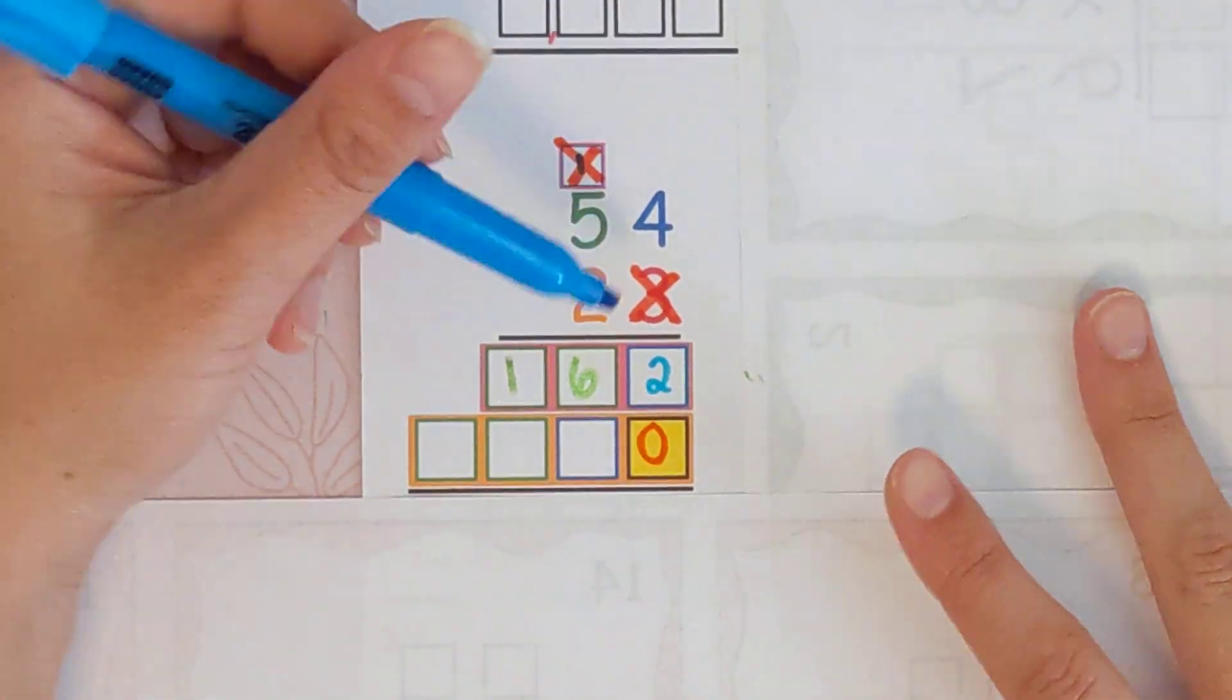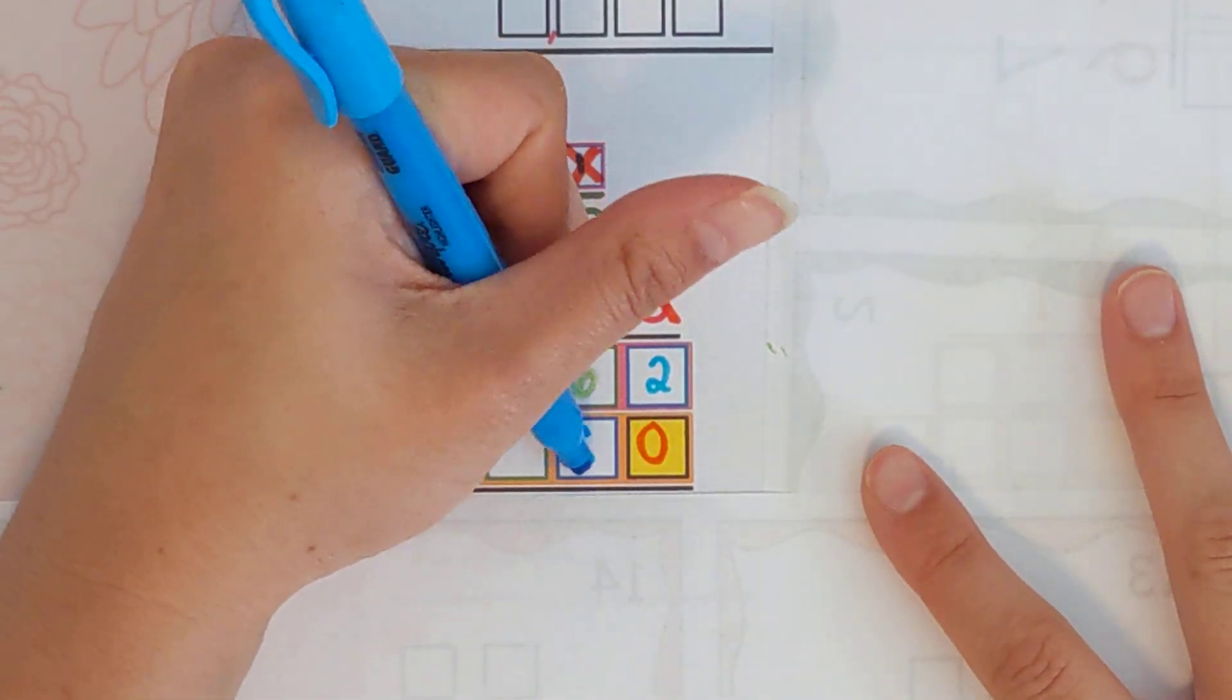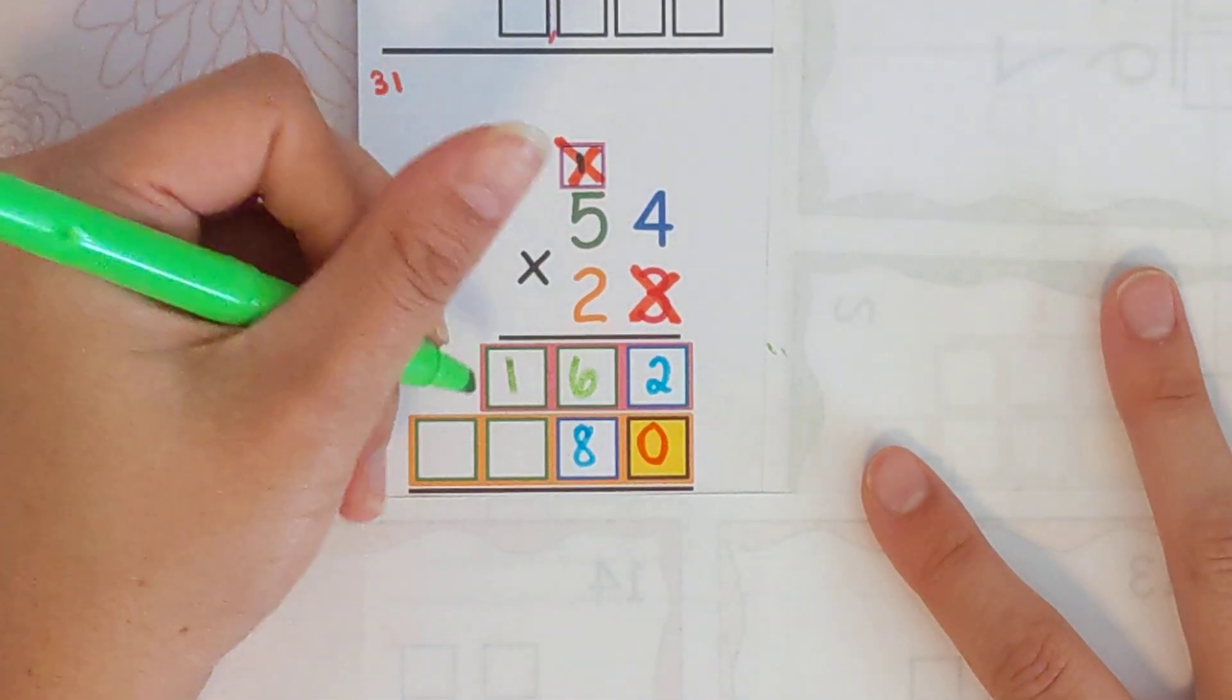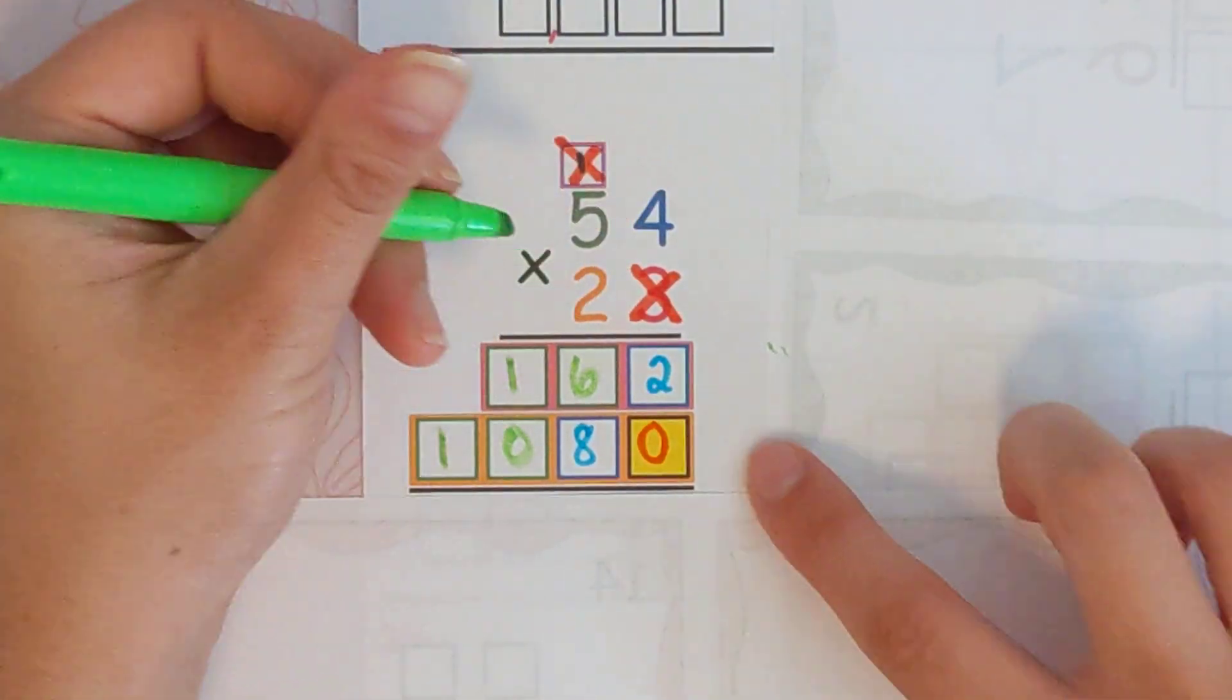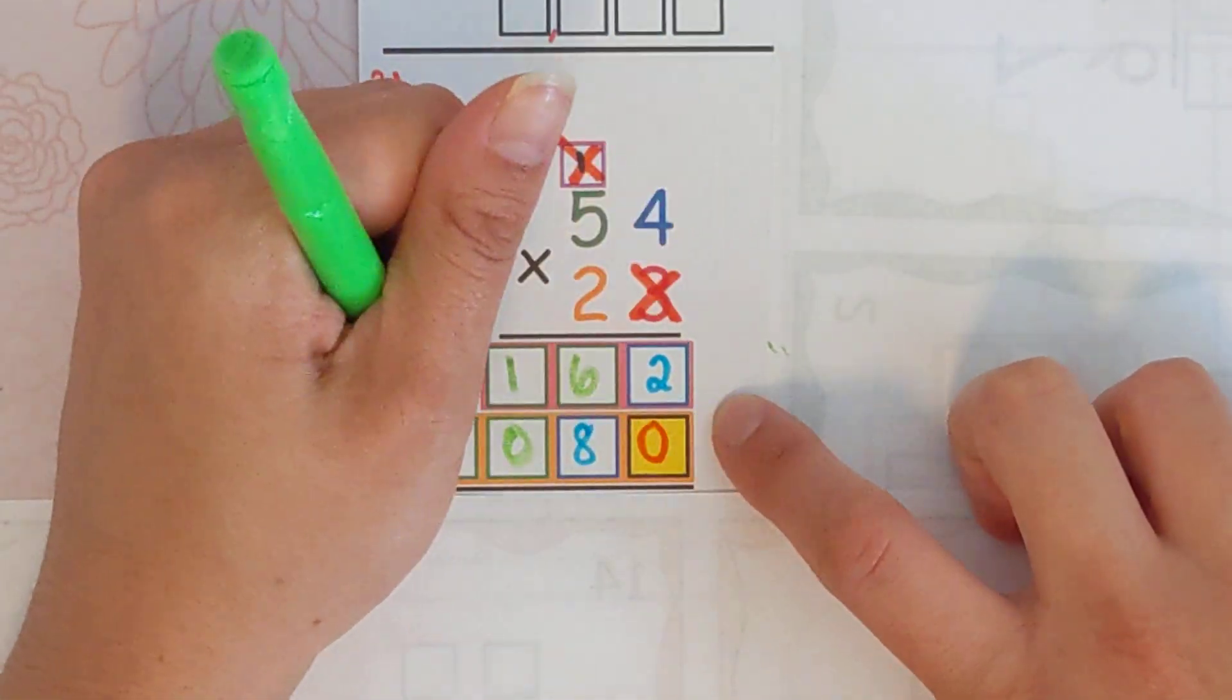Two times four and then two times five. Two times four is eight. And two times five is 10. So 54 times two is 108. But 54 times 20 is 1080.